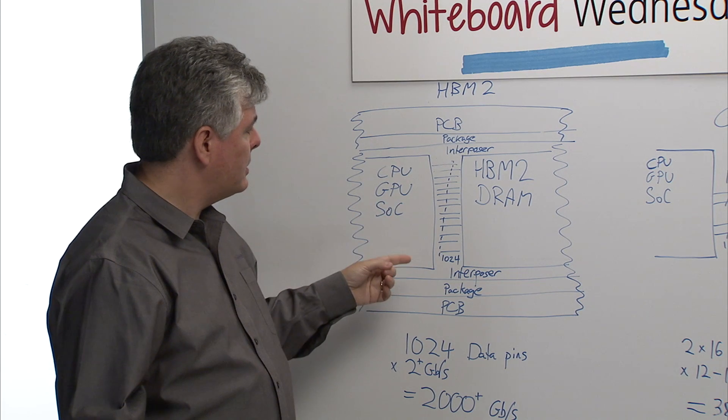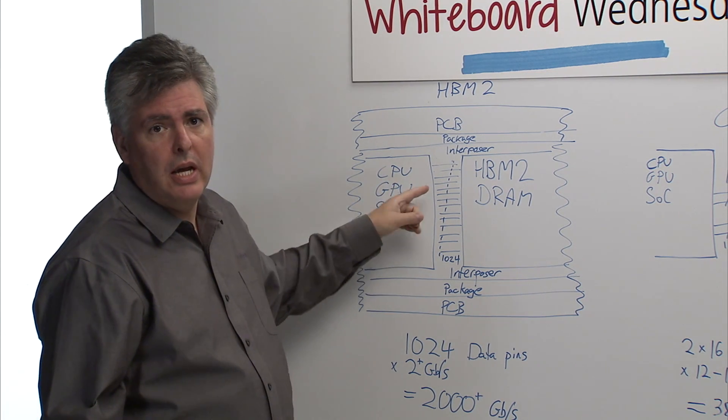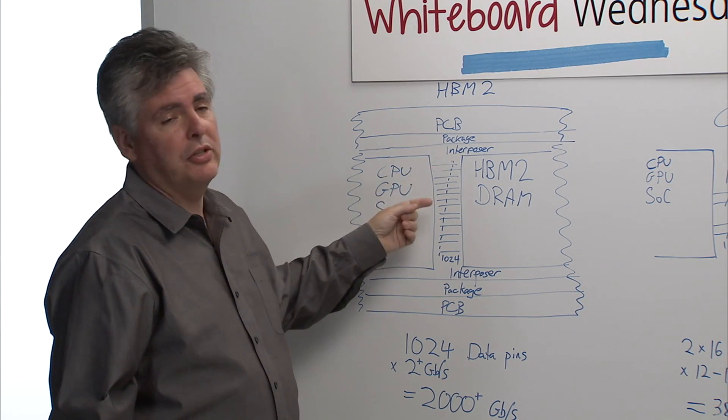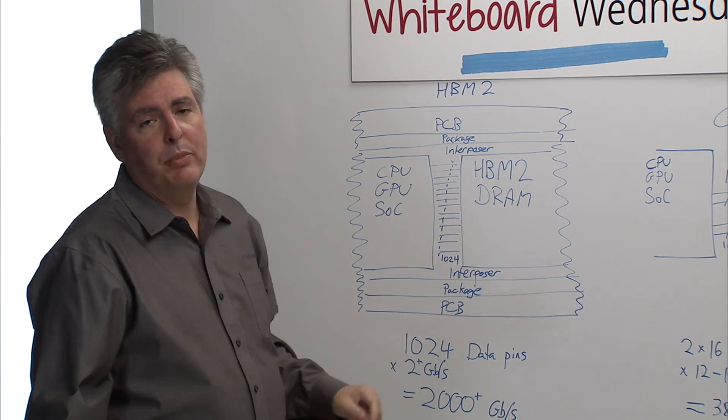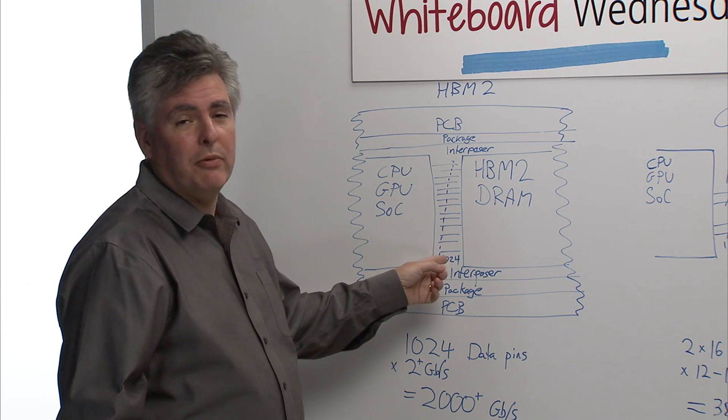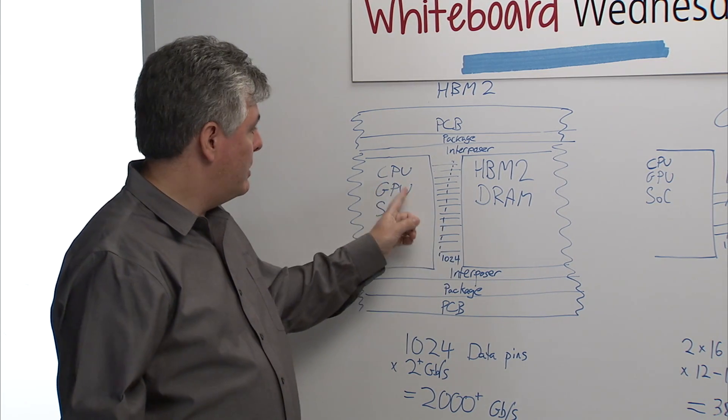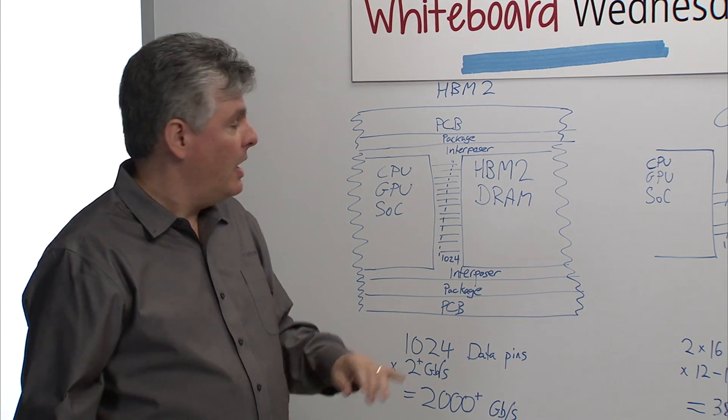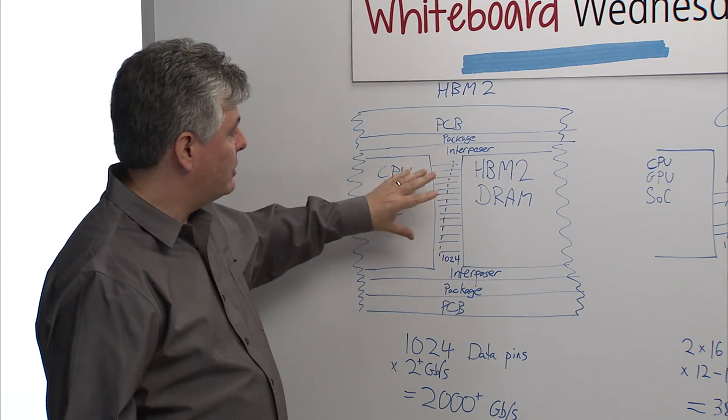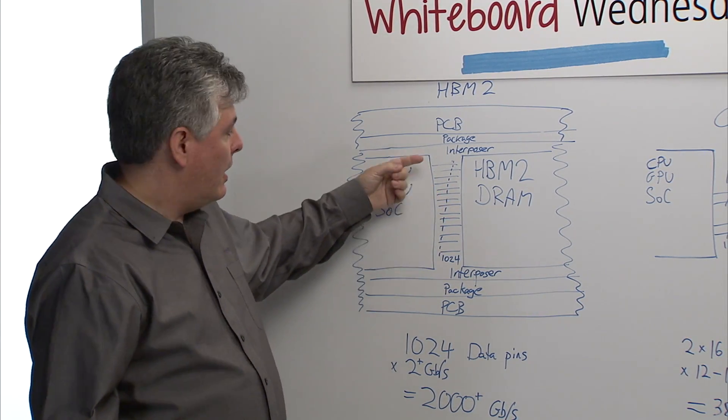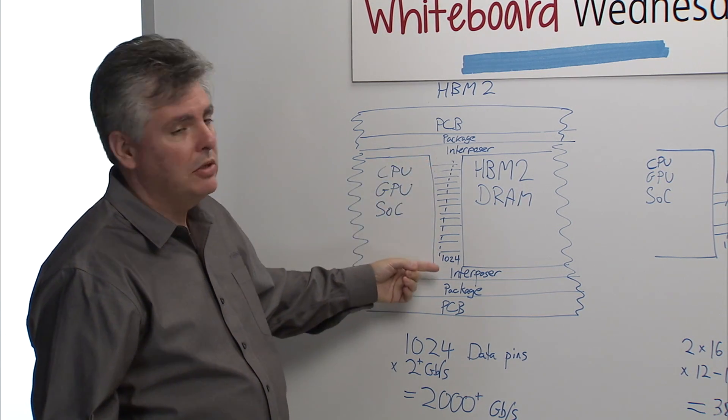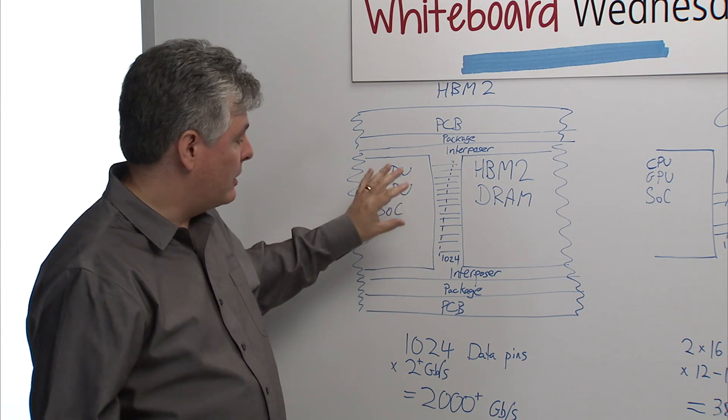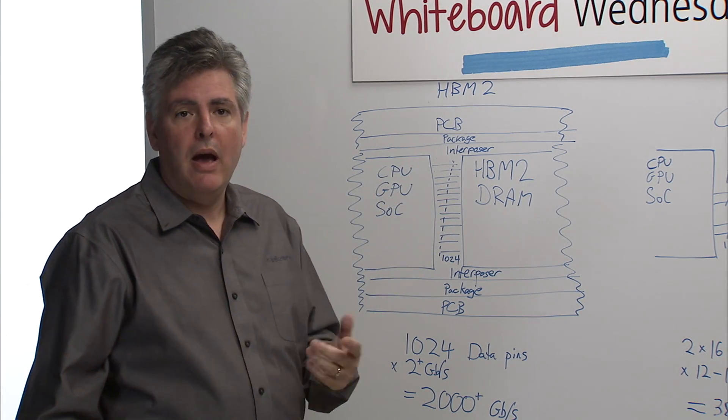The other nice thing about the silicon interposer is that it is micro bumped, which means that I can have a lot of connections between my SoC and my HBM device. For HBM2, the standard allows for 1,024 data pins between the CPU and the HBM device. This interface doesn't actually take up that much room. I could have typically up to two of these interfaces per side of my SoC. So I could get really a lot of bandwidth out of this interface.